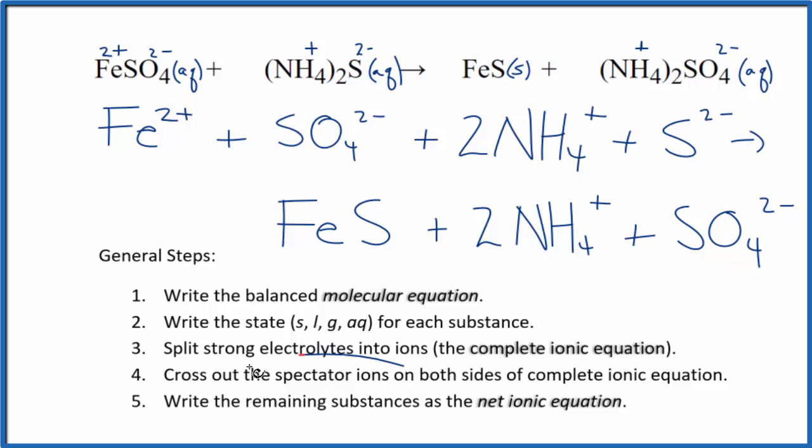At this point, we can cross out spectator ions. They're on both sides. So in the reactants here, I have the sulfate ion. I also have that in the products. That's a spectator ion. Let's cross that out.